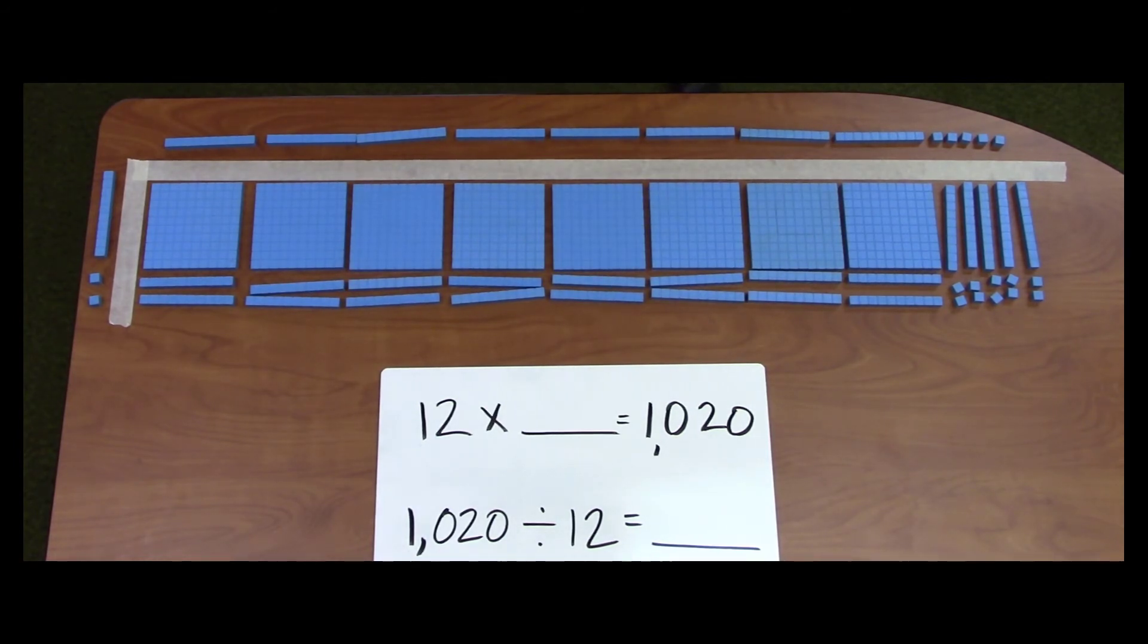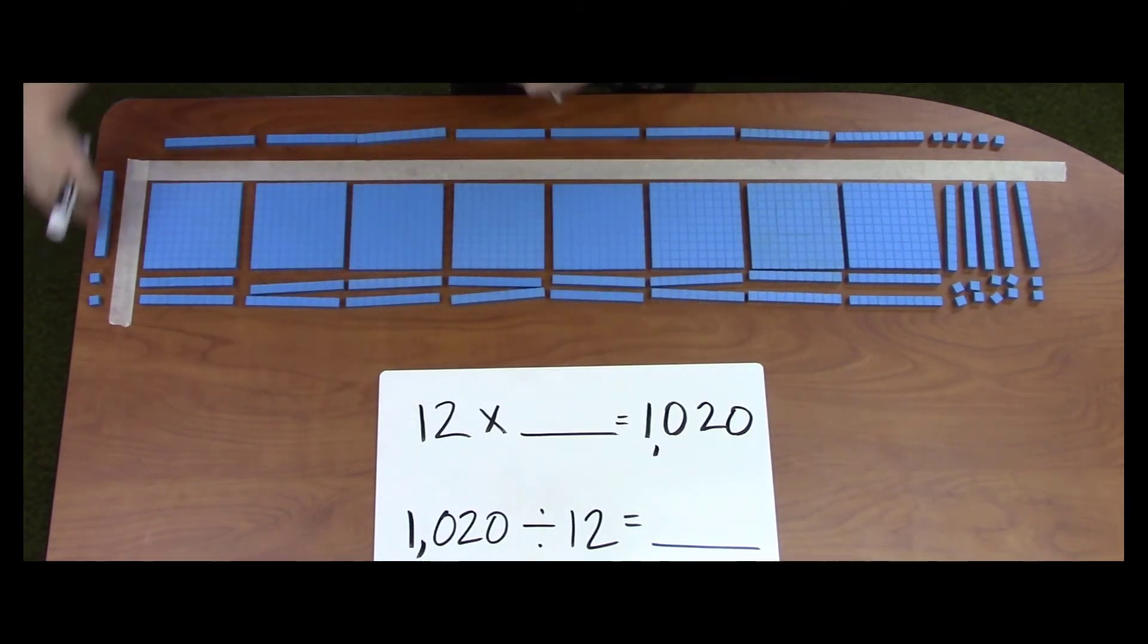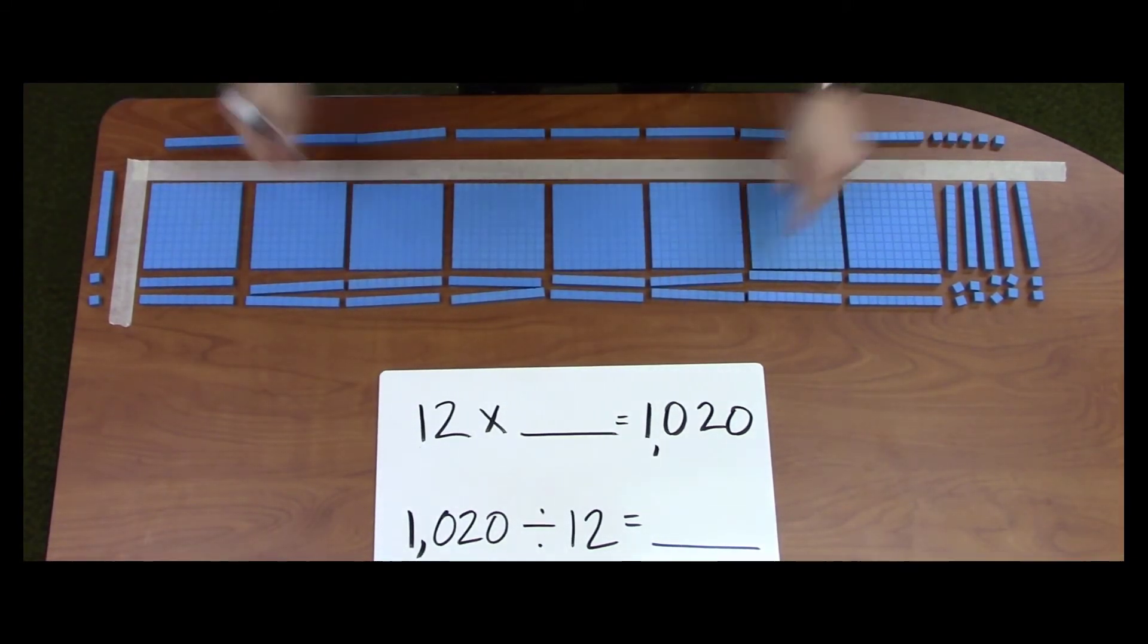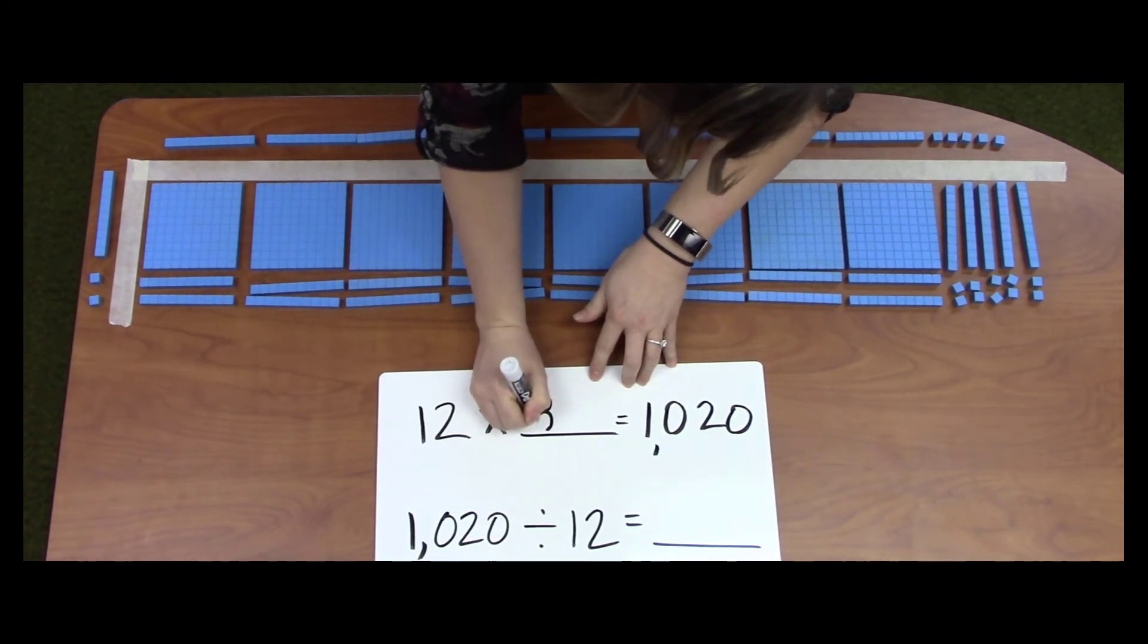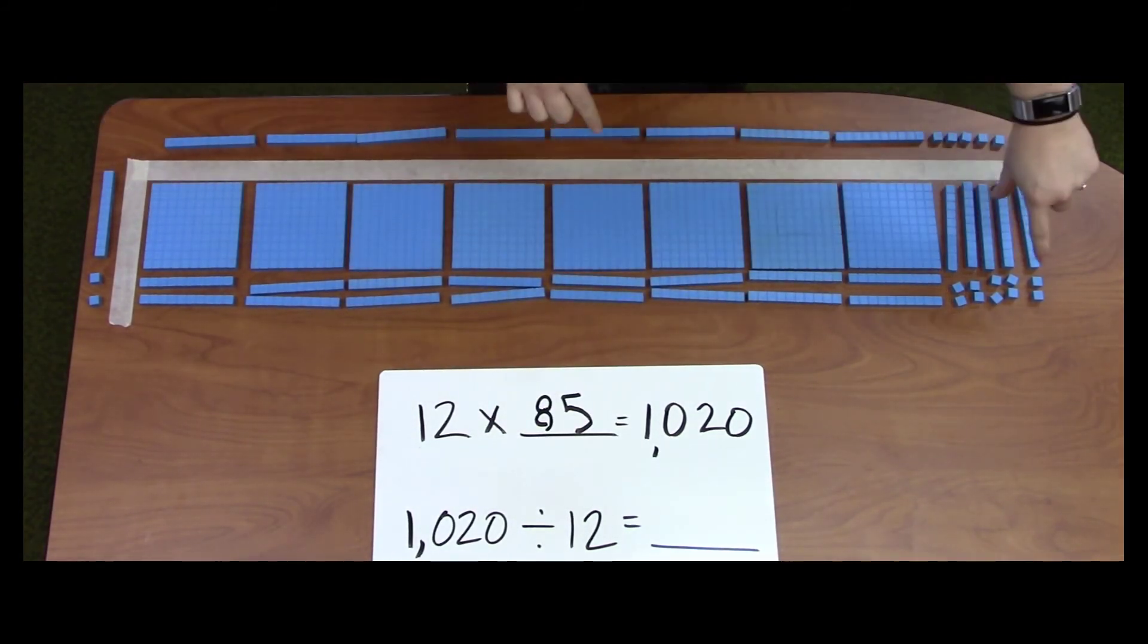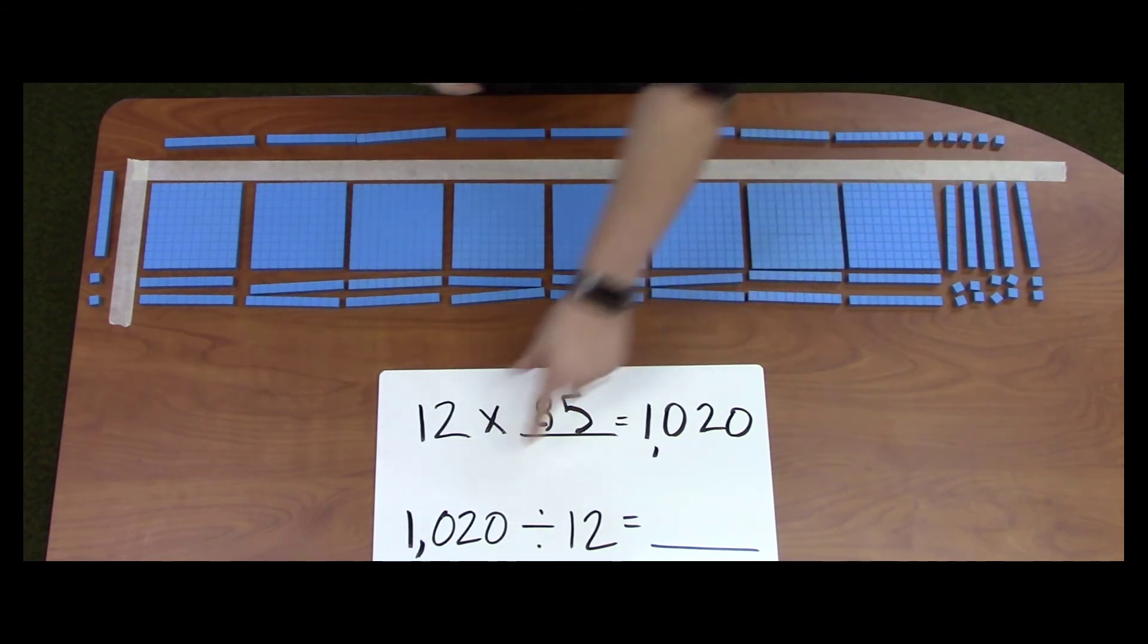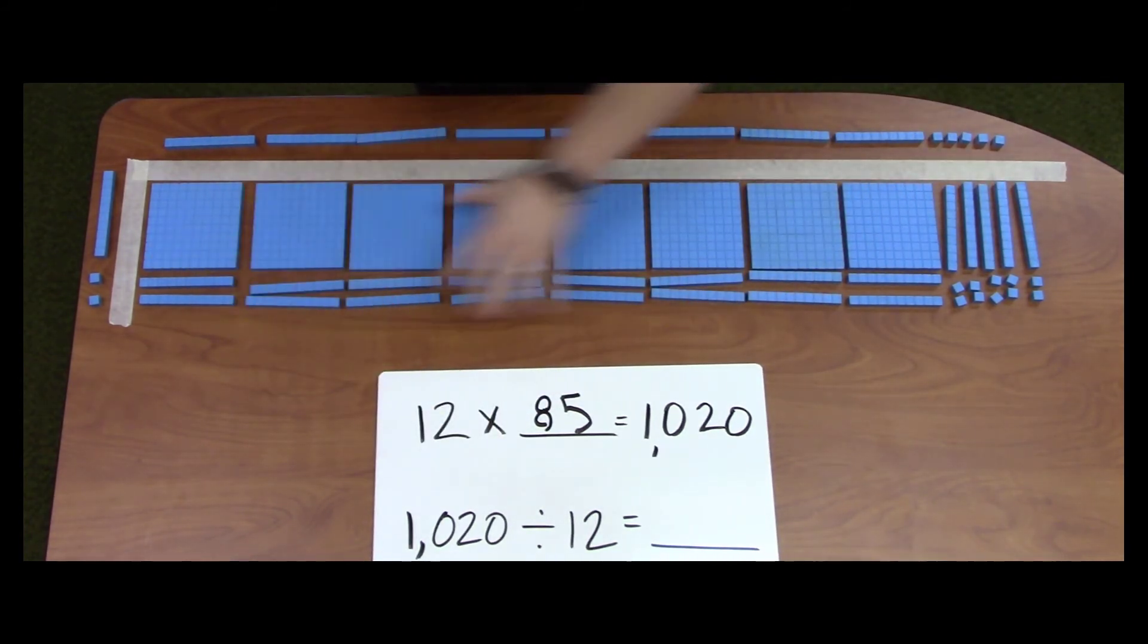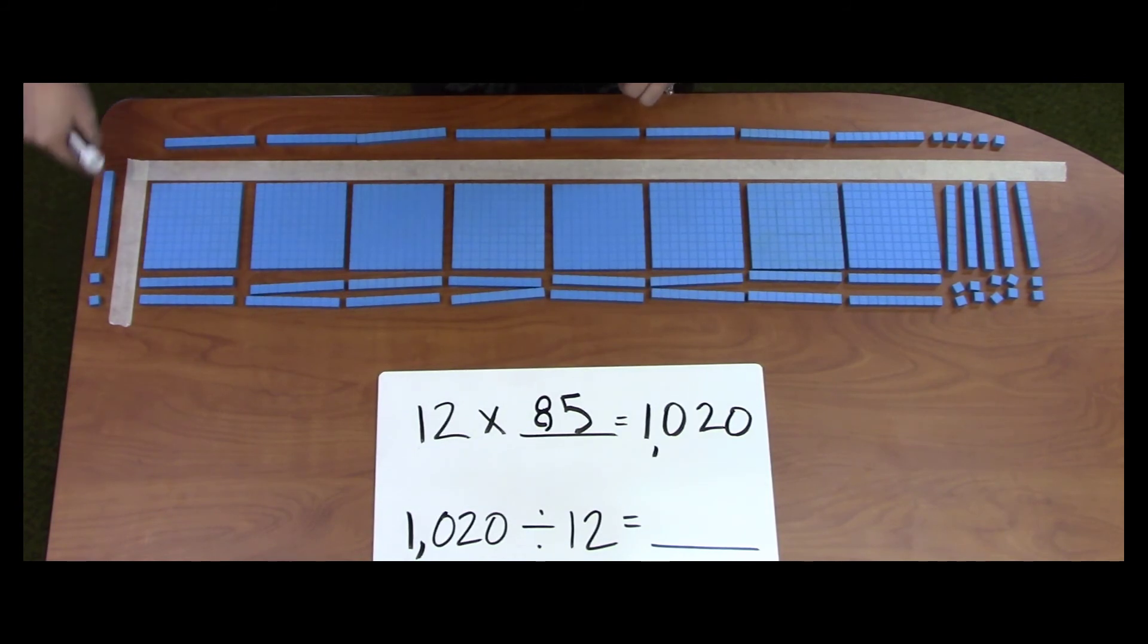Now, I can complete the equation to match the story. So, 12 times 85 equals 1,020, which is my area. Or, I can also say 1,020 divided by 12 equals 85.